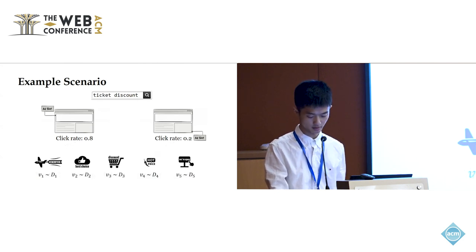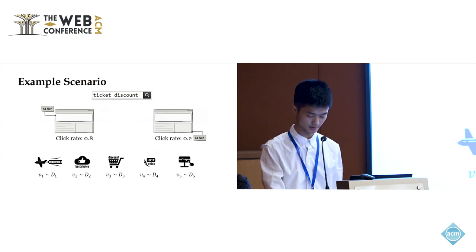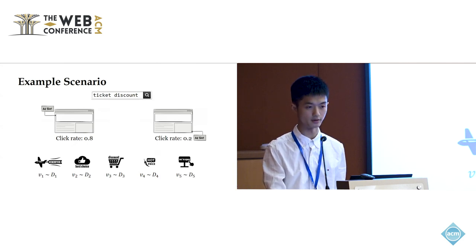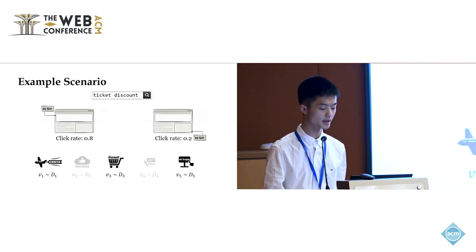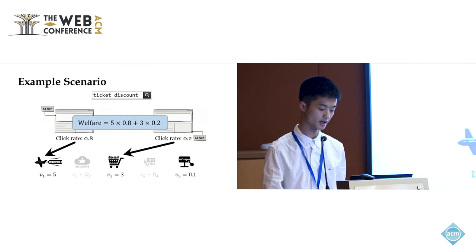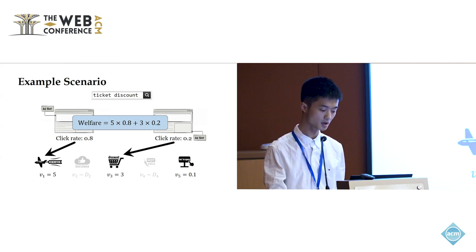If the ad company knows all the valuations, then clearly assigning the first ad slot to the advertiser with valuation 5 and the second slot to the advertiser with valuation 4 would be the socially optimal assignment. However, the ad company does not know the valuations. Instead, it only has a prior distribution for each of these valuations. Moreover, within the time limit of responding to the search, it can only afford to query three of these valuations, while the other two advertisers must be discarded. Suppose the ad company decides to query the valuations of advertisers 1, 3, and 5, and discard advertisers 2 and 4. Then after knowing the actual valuations, the ad company would assign the first ad slot to advertiser 1, which has the highest valuation, and the second one to advertiser 3, which has the second highest valuation among the selected advertisers. The social welfare of this assignment will then be 5 times 0.8 plus 3 times 0.2. This is an approximation of the optimal social welfare.